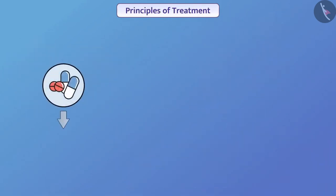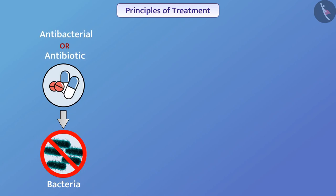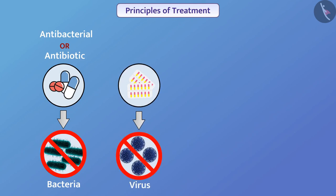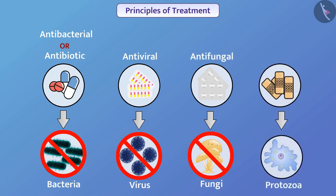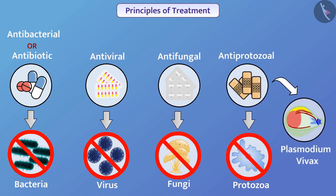A medicine that inhibits bacterial growth or kills microorganisms is called antibacterial or antibiotic. Similarly, a medicine that inhibits the growth of a virus or kills the virus is called antiviral. Medicines that inhibit the growth of protozoa or kill protozoa are called antiprotozole. Antiprotozole medicines kill the malarial parasite protozoa, Plasmodium vivax.